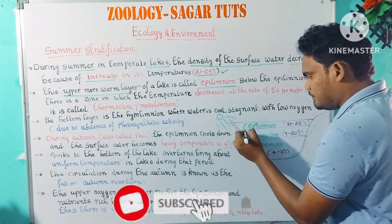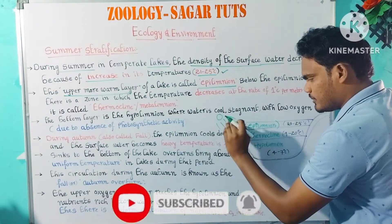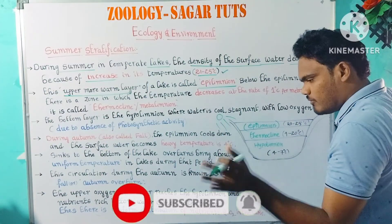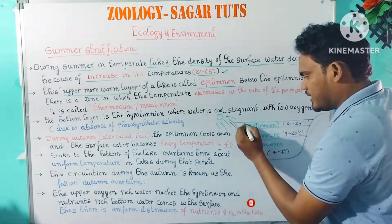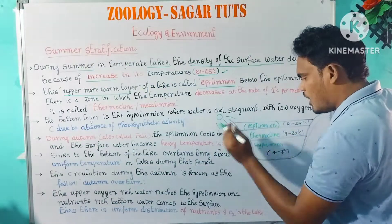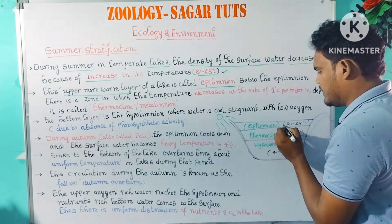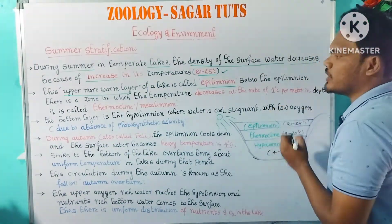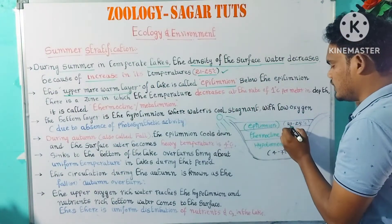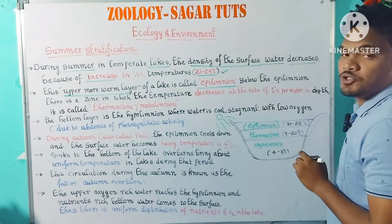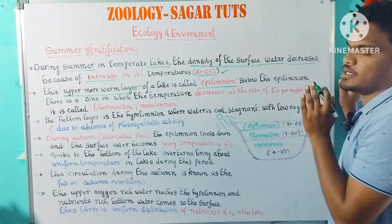So this is the epilimnion. The epilimnion is the surface of the water. The temperature of the epilimnion is 21 to 25 degrees centigrade.